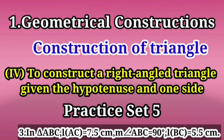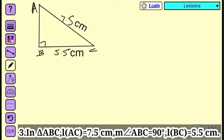We solve the practice set 5. The example is: in triangle ABC, length AC is equal to 7.5 centimeter, measurement of angle ABC is equal to 90 degrees, and length BC is equal to 5.5 centimeter. According to the example, first of all we draw the rough figure — triangle ABC. According to the rough figure, first draw length BC equal to 5.5 centimeter and give the names BC 5.5 centimeter.